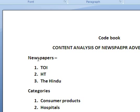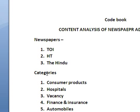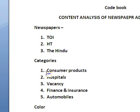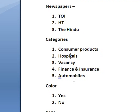We have prepared a code book and these are our variables. We have taken three newspapers and given them codes: Times of India is code number one, Hindustan Times is second, and The Hindu is third. The next variable is categories. Variables are those elements which are required to be analyzed in the content analysis research. Categories is the second variable and it has these responses: consumer products — code one, hospital — two, vacancy — three, finance and insurance — four, automobiles — five.